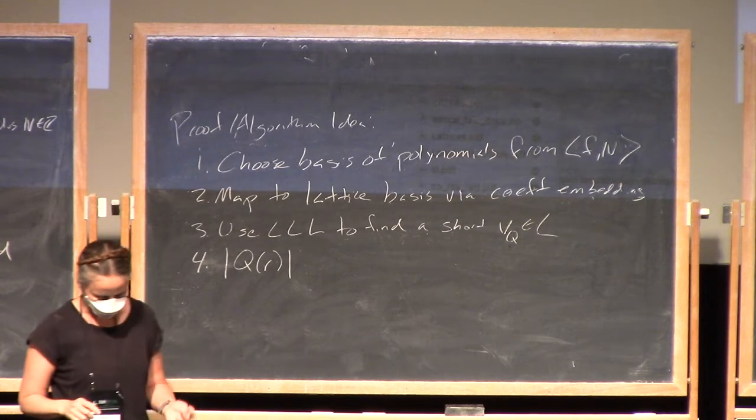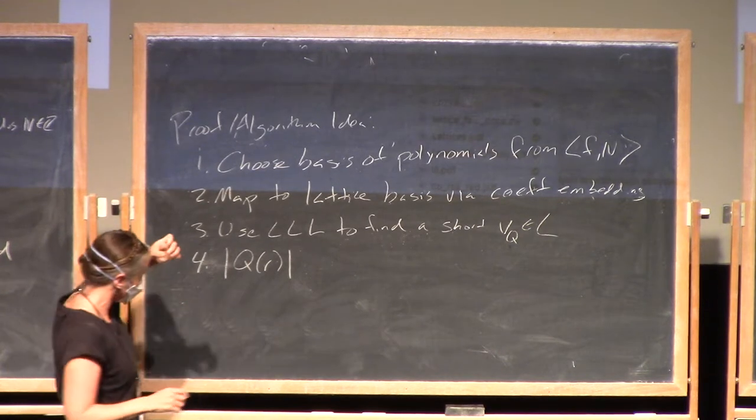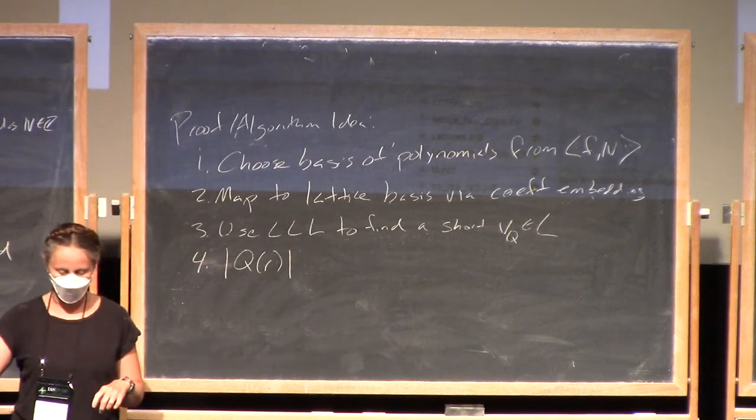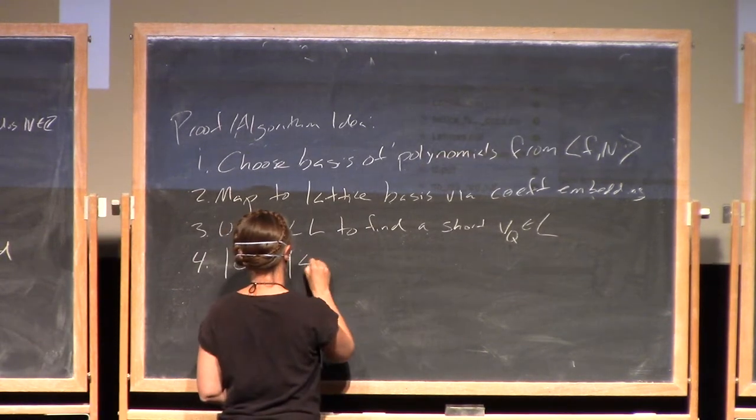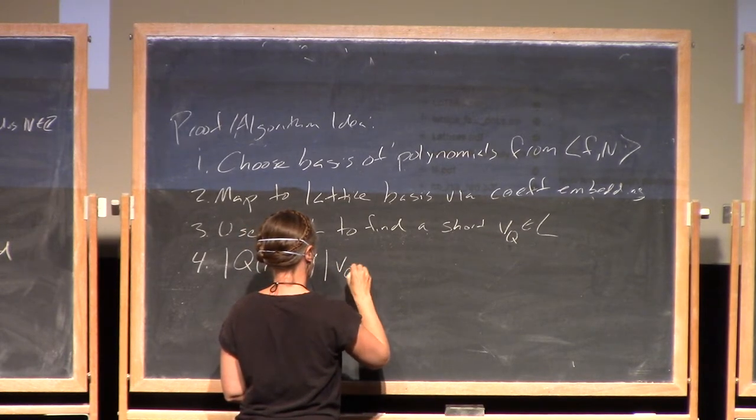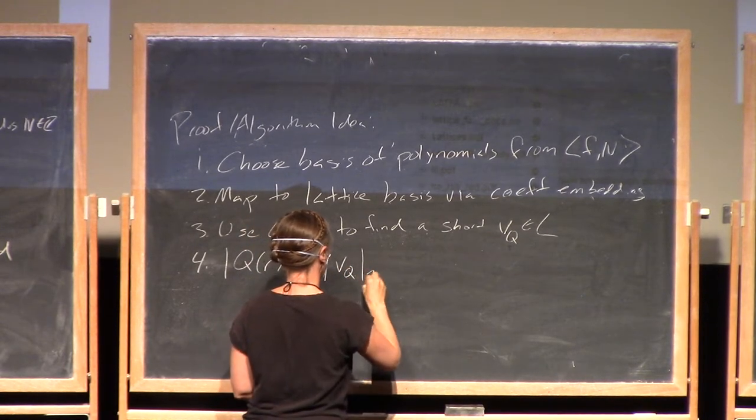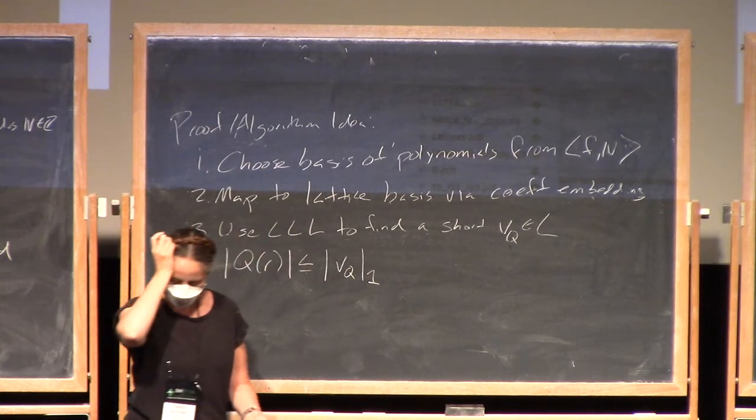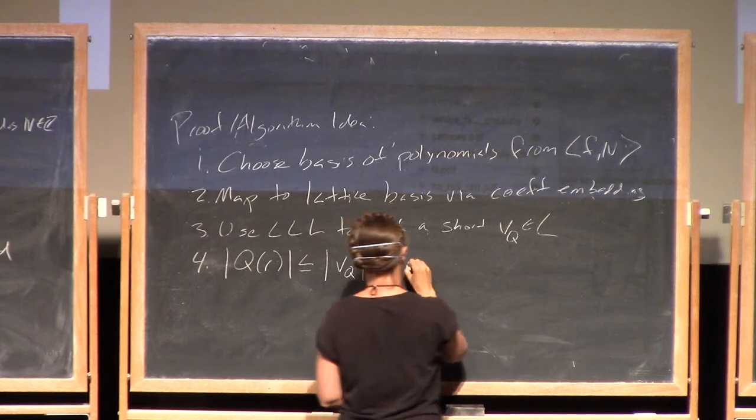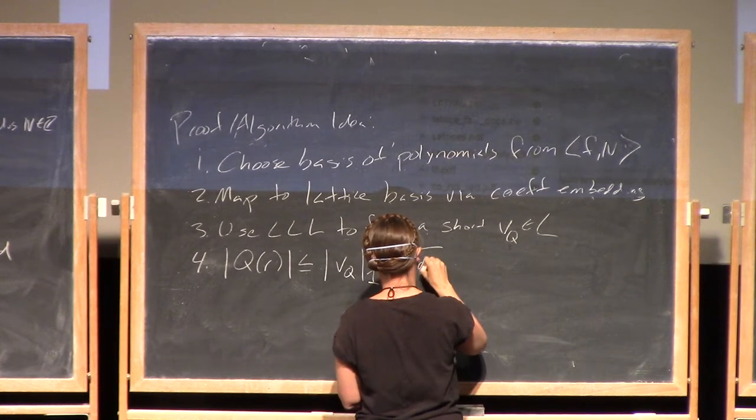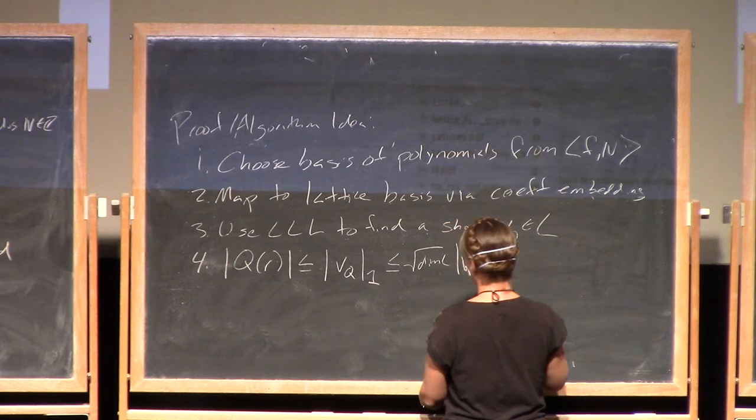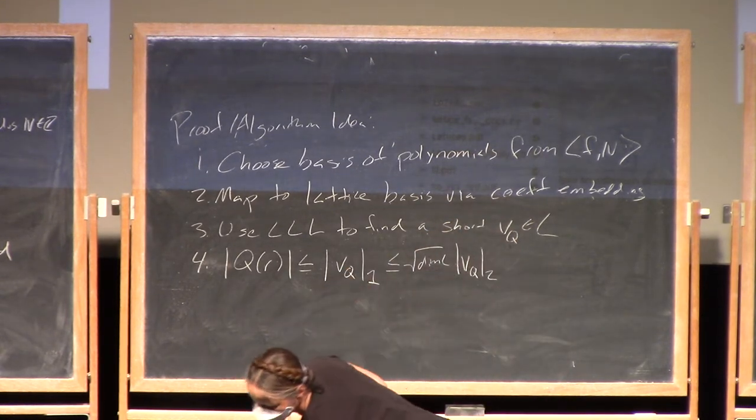We want to bound the absolute value of the evaluation of q of r and we want this to be less than n. So we know that this is less than the l1 norm of the vector that we found in the lattice, and we know that this is less than square root of dimension of the l2 norm of this vector.